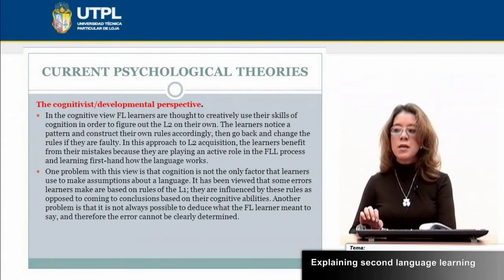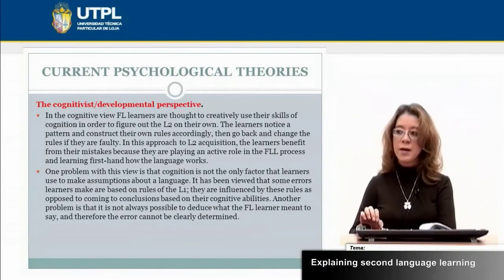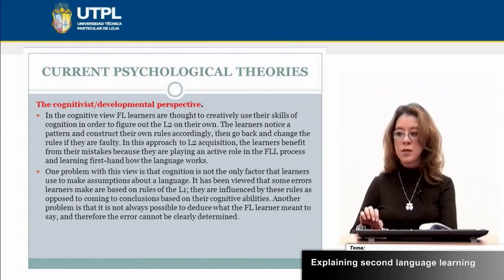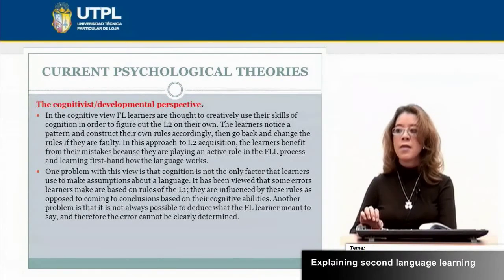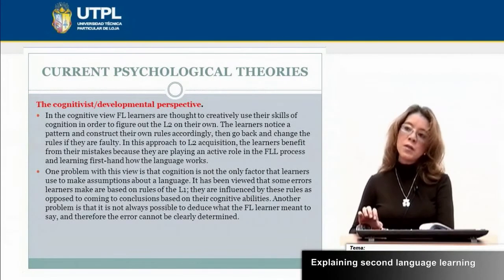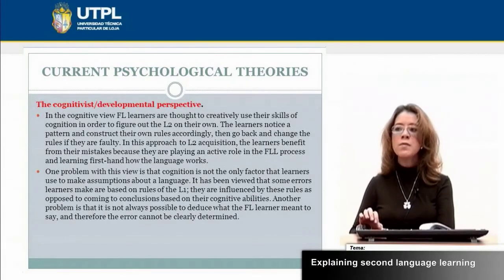One problem with this view is that cognition is not the only factor that learners use to make assumptions about a language. Some errors learners make are based on rules from the first language — they are influenced by those rules rather than arriving at conclusions through their cognitive abilities alone. Another problem is that it is not always possible to deduce what the foreign language learner meant to say, and therefore the error cannot be clearly determined.